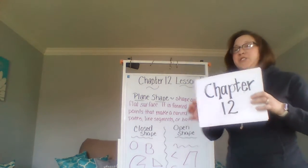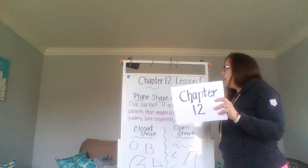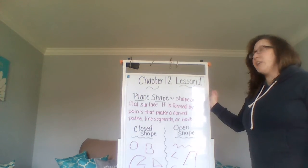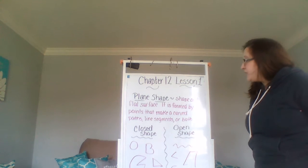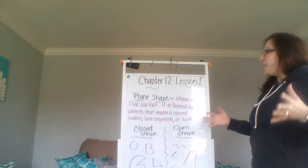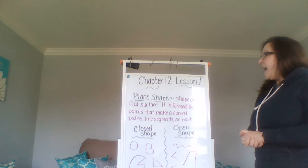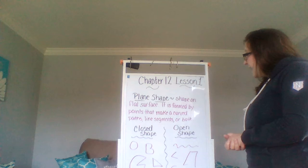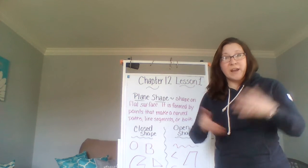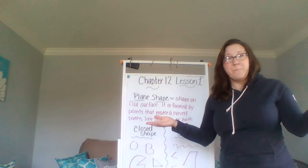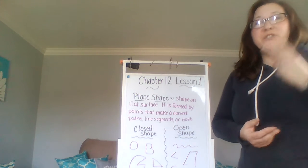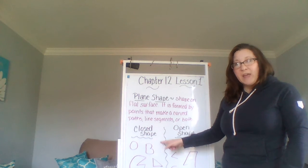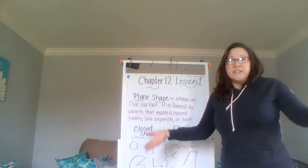We are working on lesson one. The first thing you need to know is that a plane shape has a shape that is on a flat surface. It's formed by points that can be curved paths, line segments, or both. There are also two types that you need to know about: closed shape and open shape.